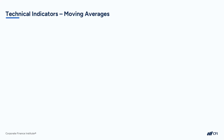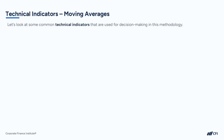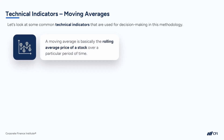Now that we know how technical models are built and managed, let's have a look at some common technical indicators used for decision-making in this methodology. The first set of indicators are moving averages. A moving average is basically the rolling average price of a stock over a particular period of time, and analysts will look at a number of different periods for different reasons.